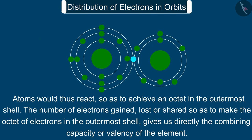The number of electrons gained, lost, or shared so as to make the octet of electrons in the outermost shell gives us directly the combining capacity or valency of the element.